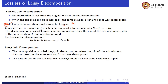This decomposition is called lossless joint decomposition when the join of sub-relations results in the same relation R that was decomposed, meaning R1 union R2 equals R. For lossless joint decomposition, R1 natural join R2 natural join R3 must be equal to R.